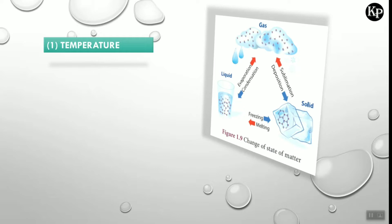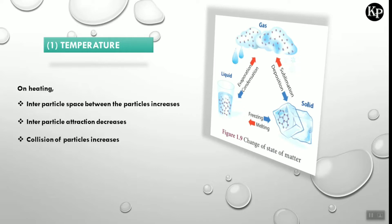Let's see temperature first. On heating, inter-particle space between the particles increases, inter-particle attraction decreases, and collision of particles increases. In the solid state, if we apply heat, the space between the particles increases, the inter-particle attraction decreases as particles move farther apart, and the force of attraction decreases.